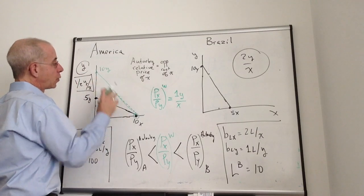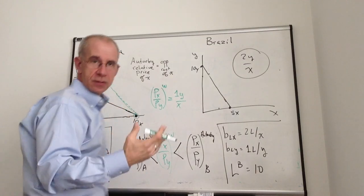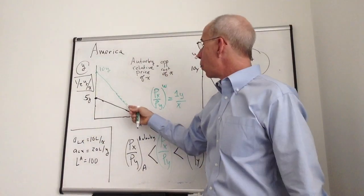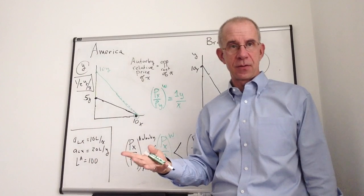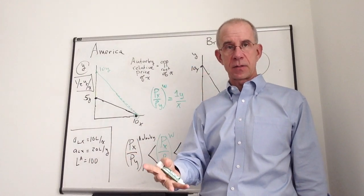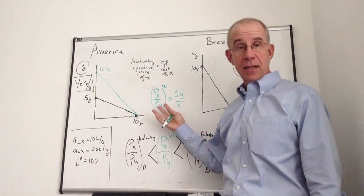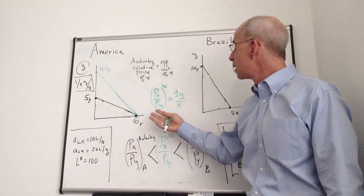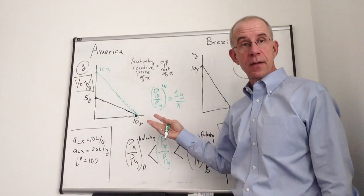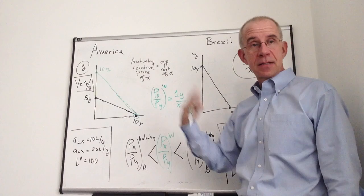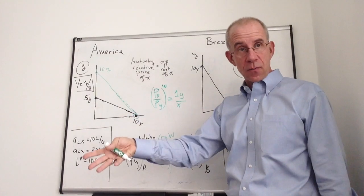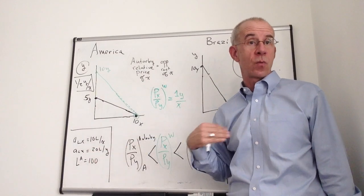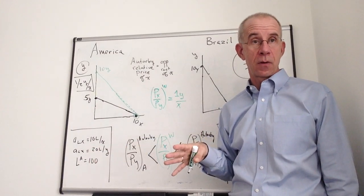All of this represents combinations of Y and X that would be impossible under autarky circumstances. So a country has an incentive, in this instance in particular America, these prices send a signal: produce more of the good of comparative advantage, trade on the world for Y, and you can get more than what you could get if you just relied on your own resources.